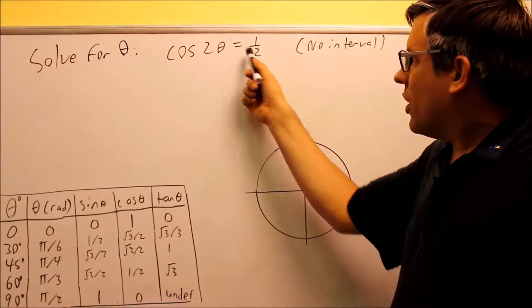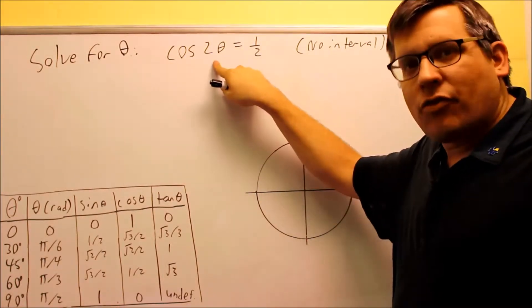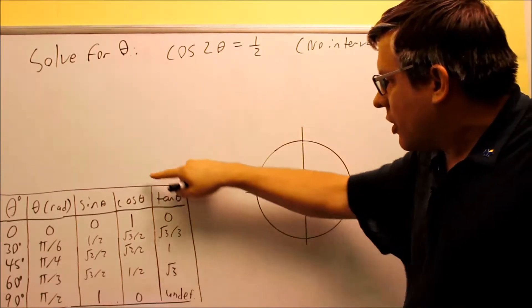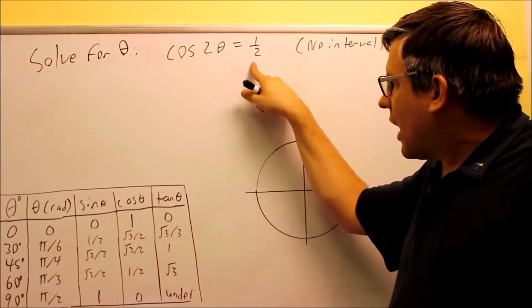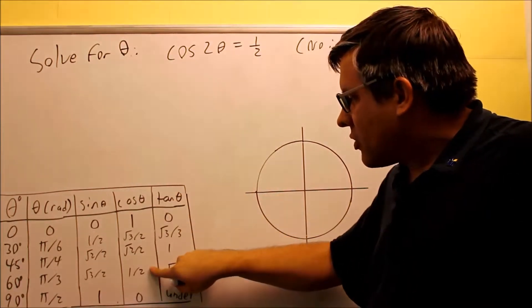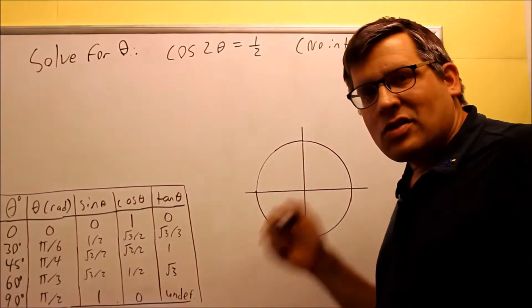So first, we notice that our trig function is already going to be isolated for us already, and what we do is we look at the table here and we see where 1 half is, and we go down there and we see that 1 half falls here, that refers to a reference angle of 60 degrees.